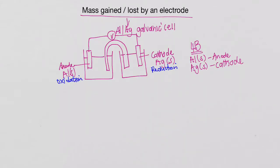So the reduction of course means that we are gaining electrons and the oxidation means that that electrode is experiencing a loss of electrons.